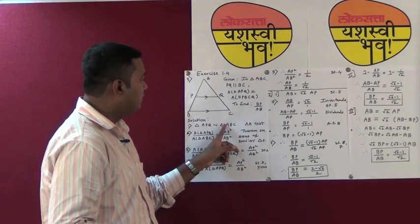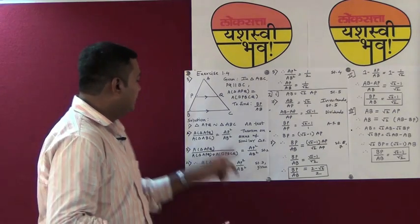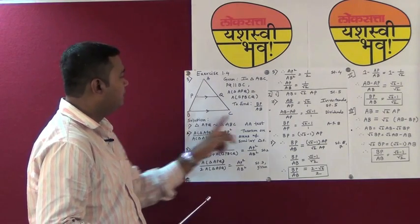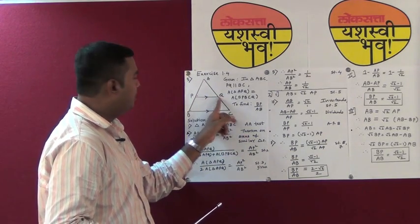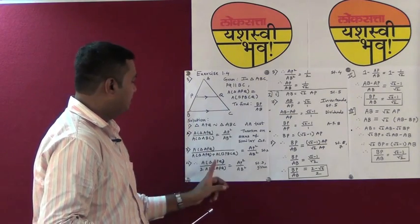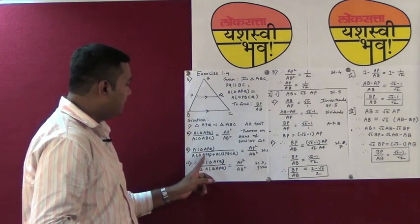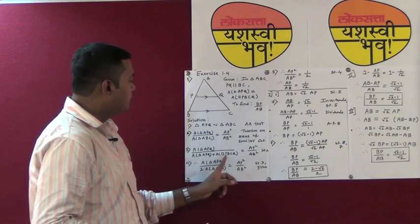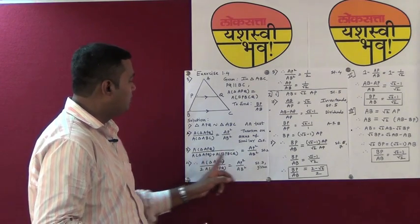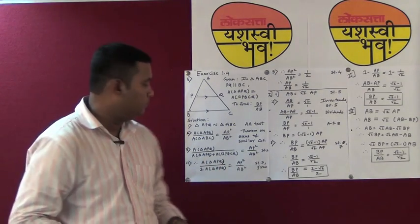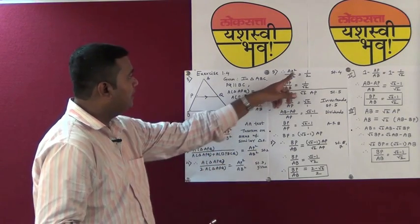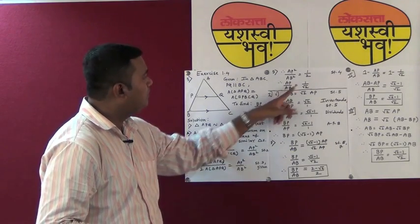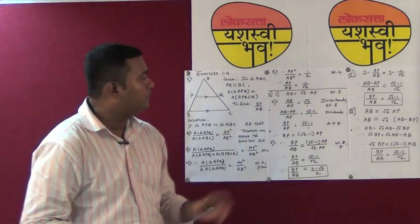Once the two triangles are proved similar, we apply the theorem on areas of similar triangles. Step two: write the ratio of areas of the two triangles is equal to AP square upon AB square, with the reason being step one and the theorem on areas of similar triangles. Then, using the area addition property, we write the area of triangle ABC as the area of triangle APQ plus the area of quadrilateral PBCQ. Since both areas are equal, replacing PBCQ with APQ gives us twice the area of triangle APQ, which cancels from numerator and denominator, giving AP square upon AB square equals 1 upon 2, so AP upon AB equals 1 upon root 2.